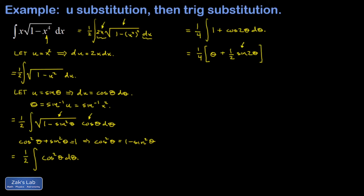I'll remember to add the plus C at the end. The problem isn't done because it's not in terms of x, so now I go back and figure out how to replace θ in terms of x — it's arcsin(x-squared). The troublesome piece is sine of 2θ, because while we can handle a trig function of an inverse trig function, a trig function of twice an inverse trig function is tricky. So we need to use an identity: the sine of twice some angle — here the angle whose sine is x-squared — equals twice the sine times the cosine of just that angle.